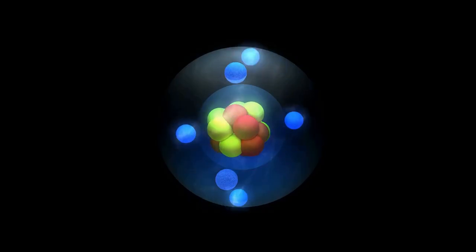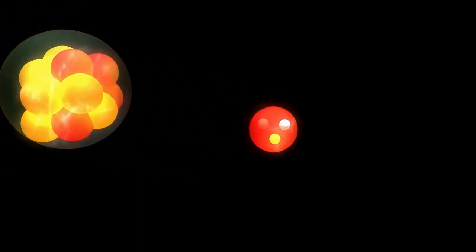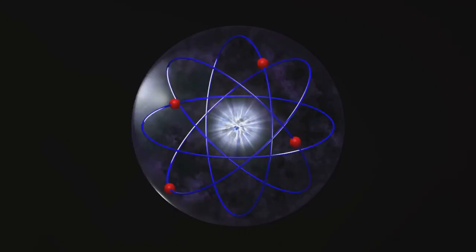So, an electron isn't just a point-like particle. Instead, it's a tiny string vibrating at a frequency that gives it the properties of an electron.